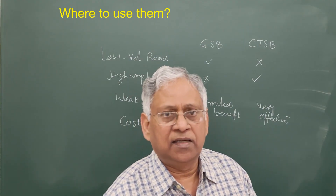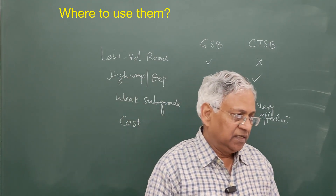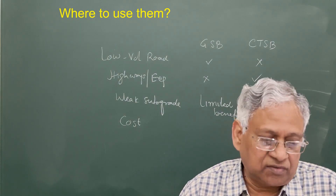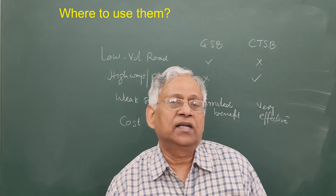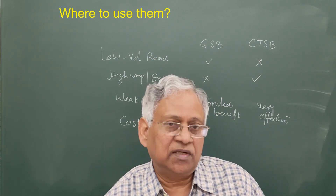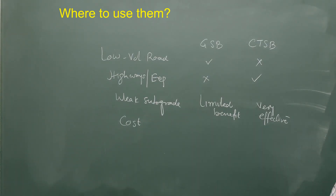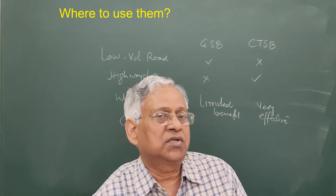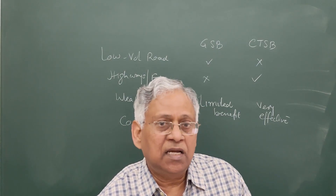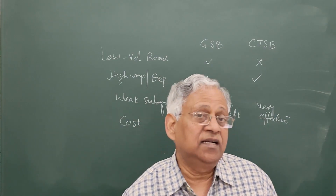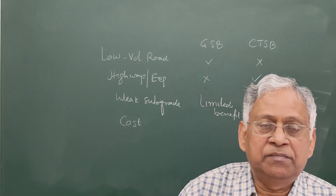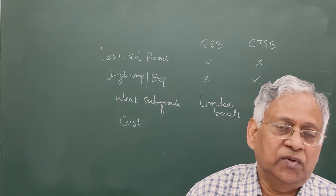To summarize, GSB has three advantages: it is easy to construct, has good drainage, and has low cost. Its two major limitations are low structural strength and higher layer thickness required. CTSB, on the other hand, has high strength and stiffness, provides reduced total pavement thickness, and offers better performance under heavy traffic. The limitations of CTSB are that it requires skilled construction, has slightly higher cost, requires a curing time of 3 to 7 days before placing another layer, and there may be some risk of cracking if cement quantity is too high.